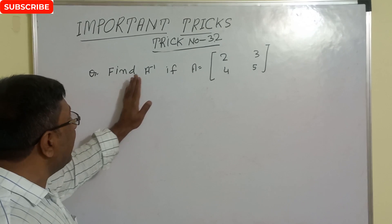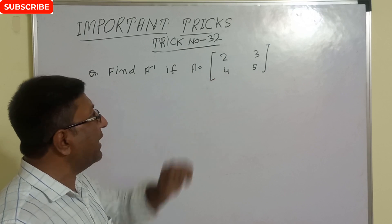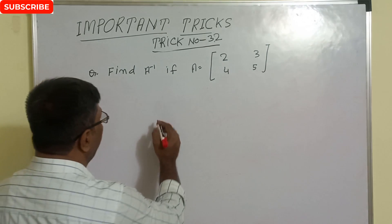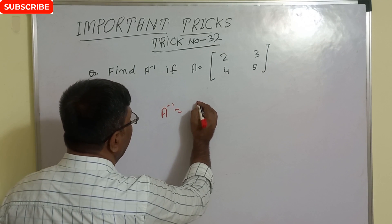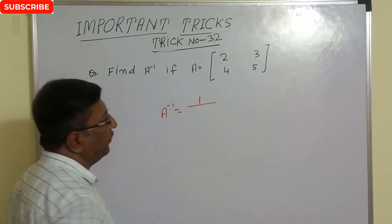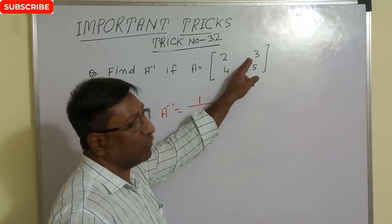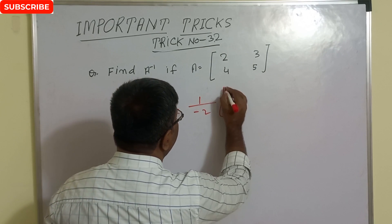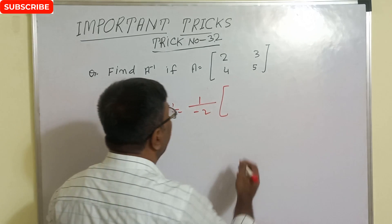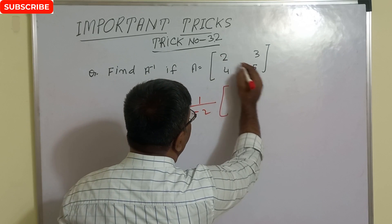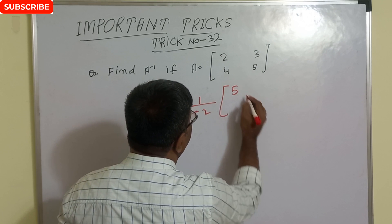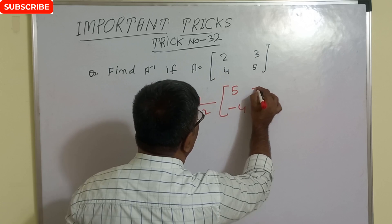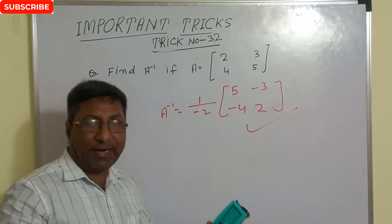Find A inverse if A equals [2, 4; 3, 5] — this is a 2×2 matrix. Very simple technique for finding A inverse: A inverse equals 1 by determinant of A. Determinant of A is 10 minus 12, so 10 minus 12 equals minus 2. The adjoint: interchange the diagonal — so 5 and 2 — and change the sign of the secondary diagonal: minus 4 and minus 3. This is the correct answer.